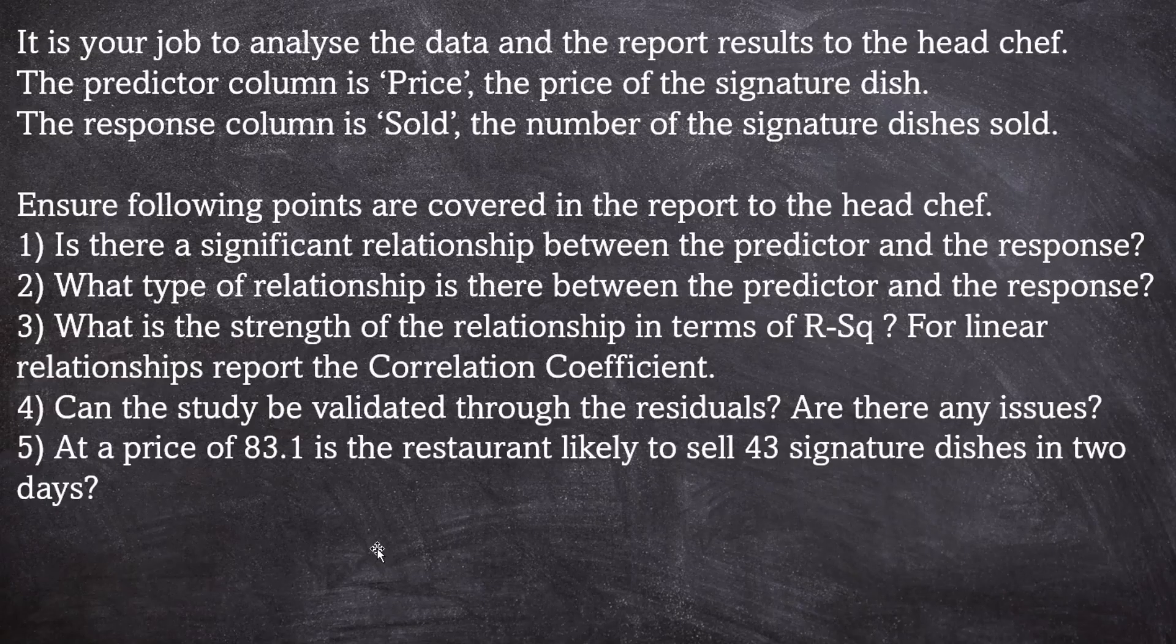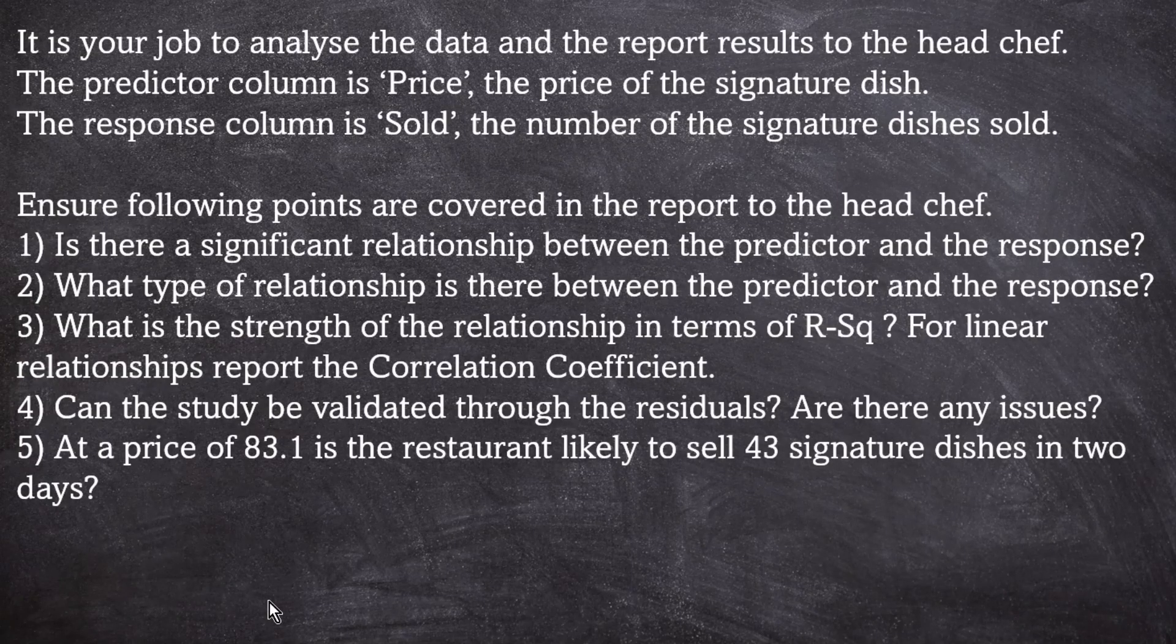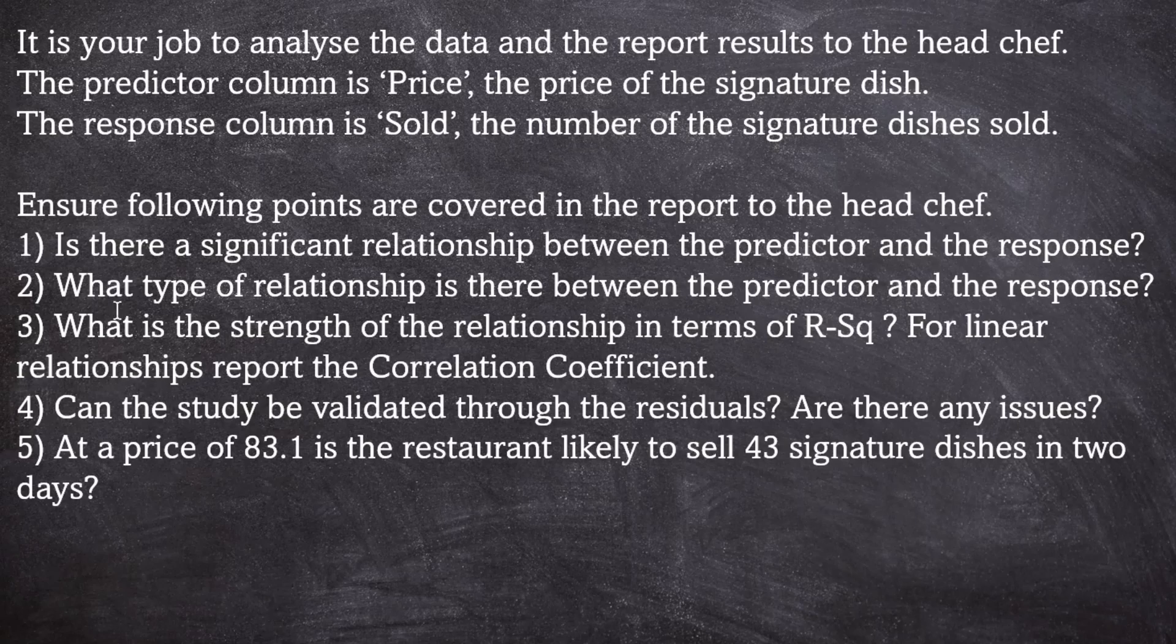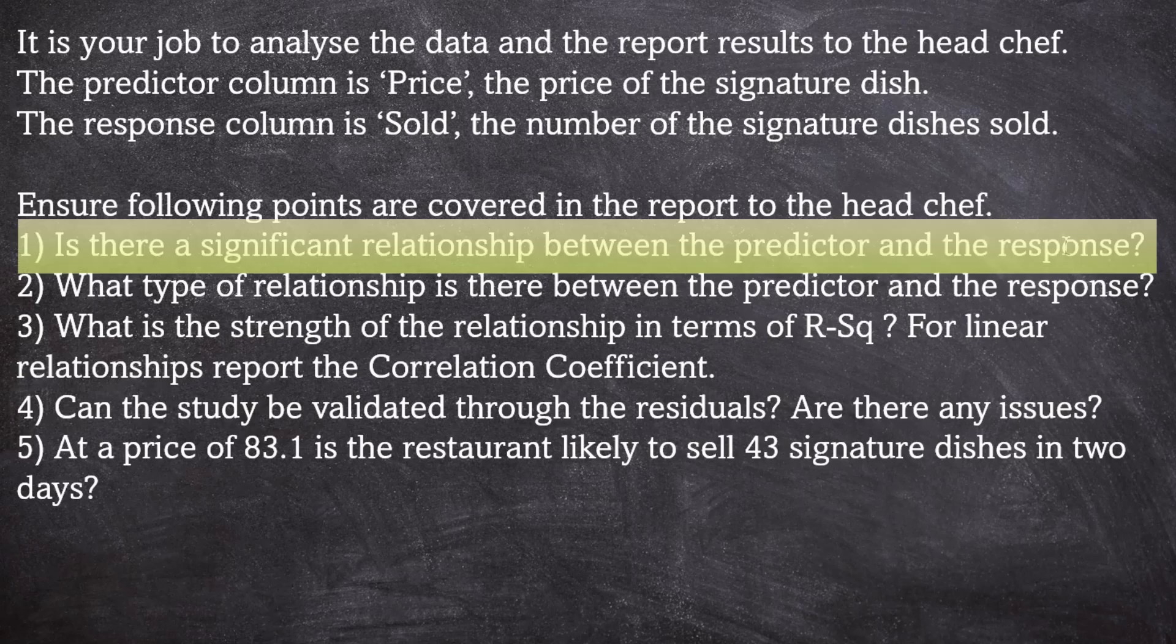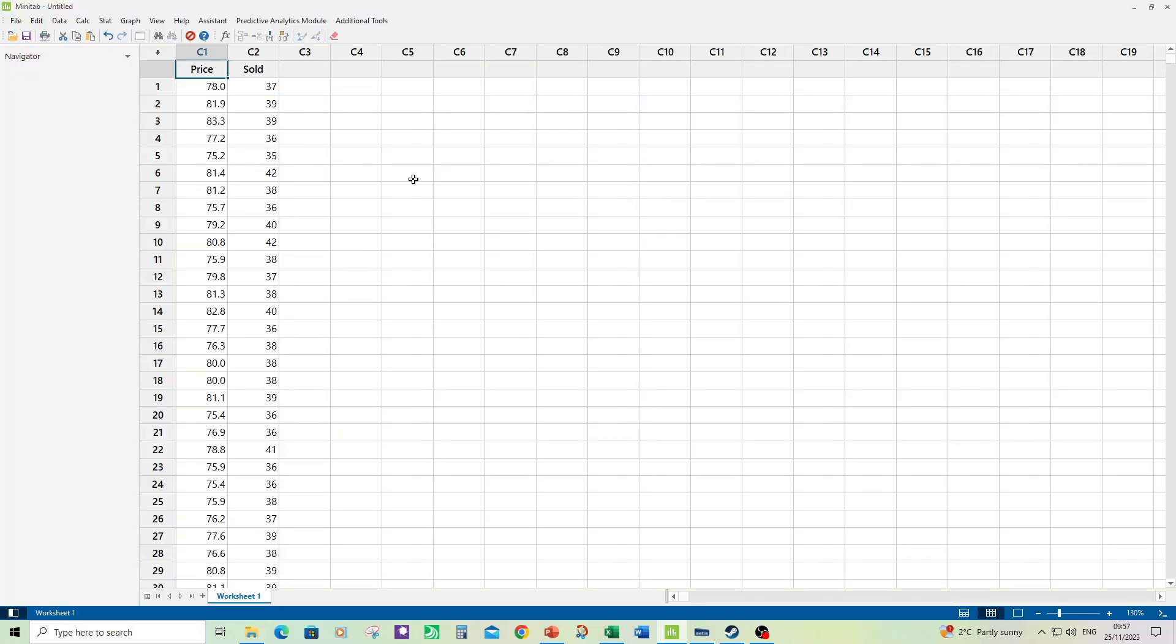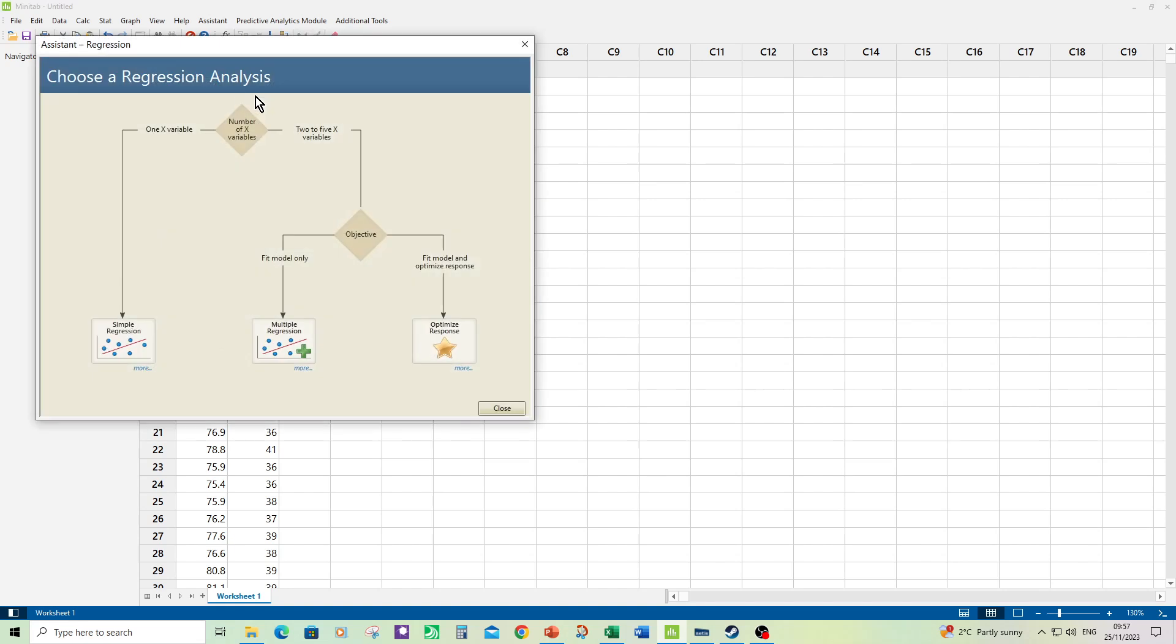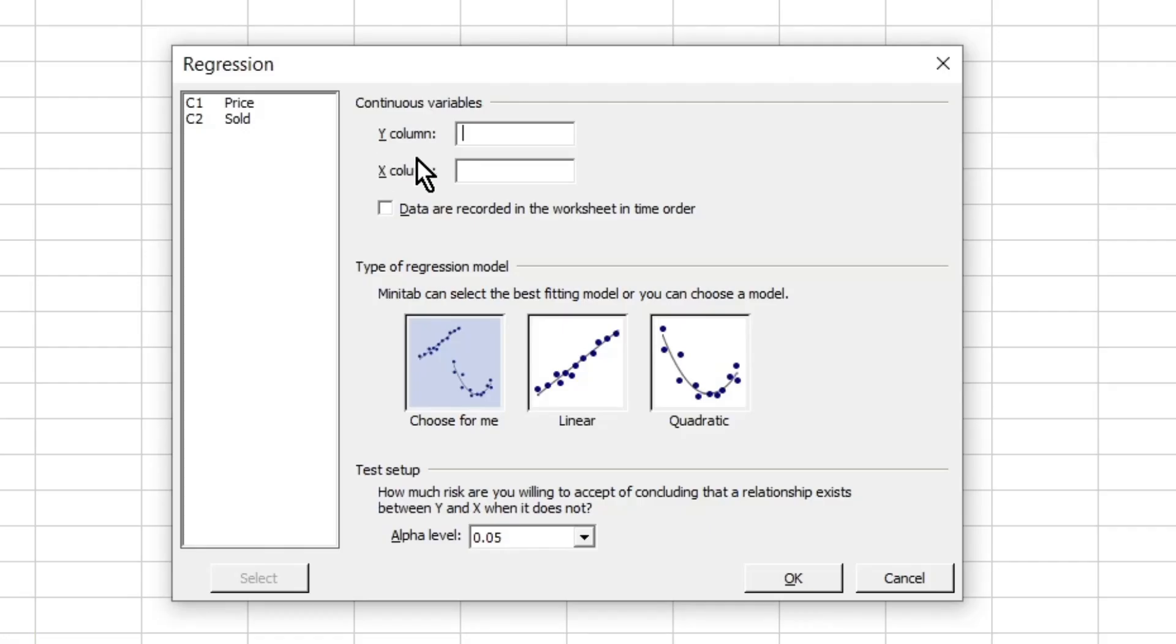We need to prepare a report for the head chef and within that report the first thing that we need to make clear is is there a significant relationship between the predictor and the response? To do that we need to go into the assistant, go into the regression module and run the simple regression. So we click on that. The Y column is traditionally the response and for us the Y column is sold. And then the predictor column is price.